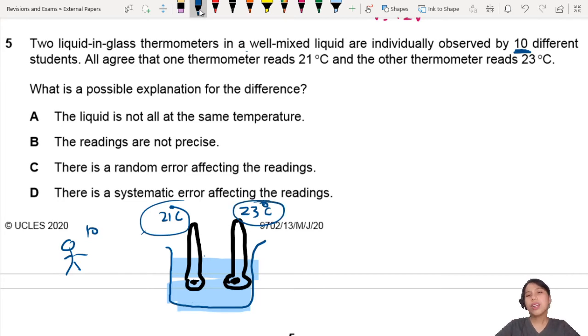So what's the possible explanation for the difference? Why is this different? Could it be all the students have eye problems? No, all 10 of them look at the thermometer and they agree that it should be 21 degrees.